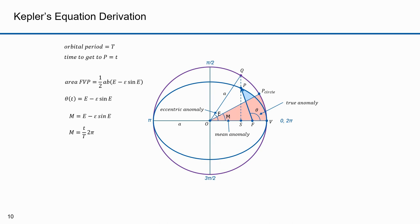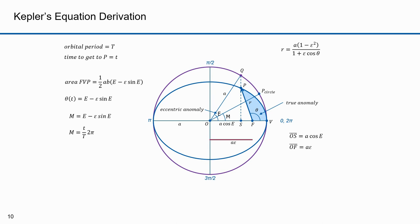What we really want is to determine time given position P, or position given time — so we need a formula relating theta to E. The line segment OS equals A times cosine E. The length of OF — the focal point — is A times epsilon. Let's call R the length of the position vector from focus F to position P.